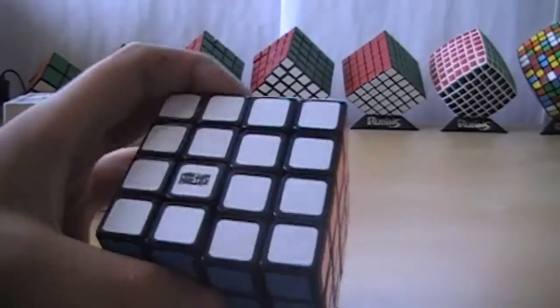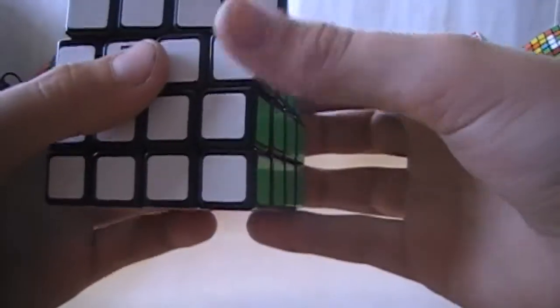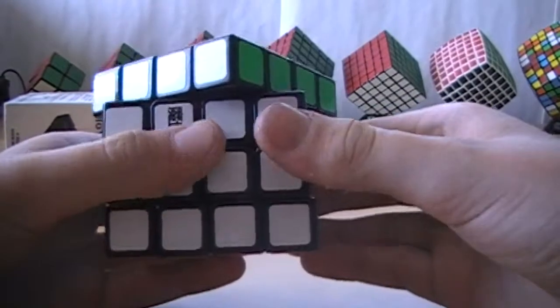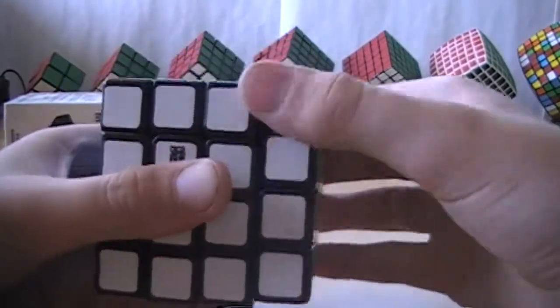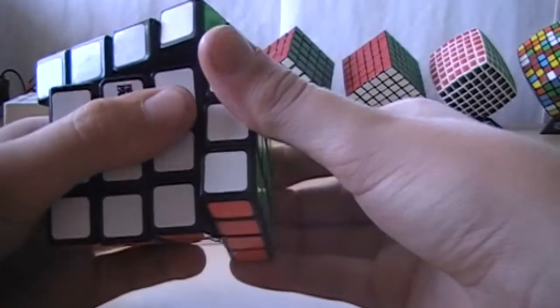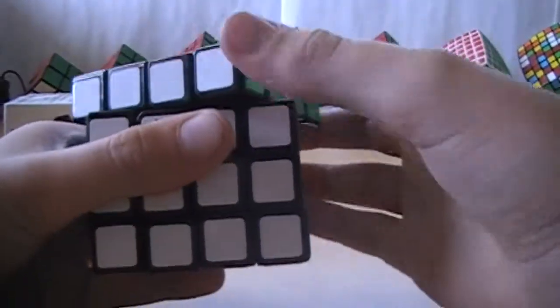So yeah, let's see corner cutting real quick. This is forward corner cutting. It can do, yeah, if you force it, it can do like a cubie. That's pretty good.